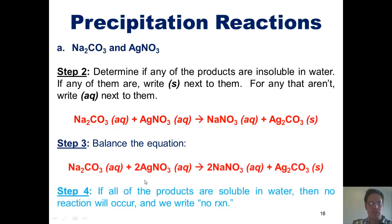Step 4 says that if all of the products are soluble in water, then no reaction will occur, and we write no reaction. In this particular case, we do have one of the products, silver carbonate, that is insoluble in water. Hence, step 4 does not apply. We have now completed this problem.